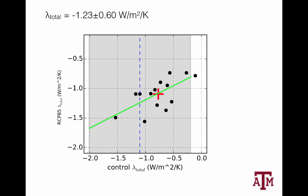So this is the CERES estimate of lambda. If you use a stratosphere-adjusted forcing of 3.7 watts, that gives you 3 plus or minus 1.4 for ECS. I sort of look at that and think, if only it was 3 plus or minus 1.5. Alas, it was 1.4.